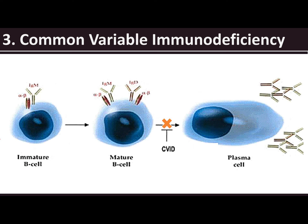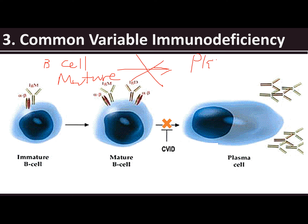In the illustration, compare this with Bruton's agammaglobulinemia. In common variable immunodeficiency, the B cell is able to mature. But the problem is the B cell cannot become a plasma cell, and thus is unable to produce antibodies.